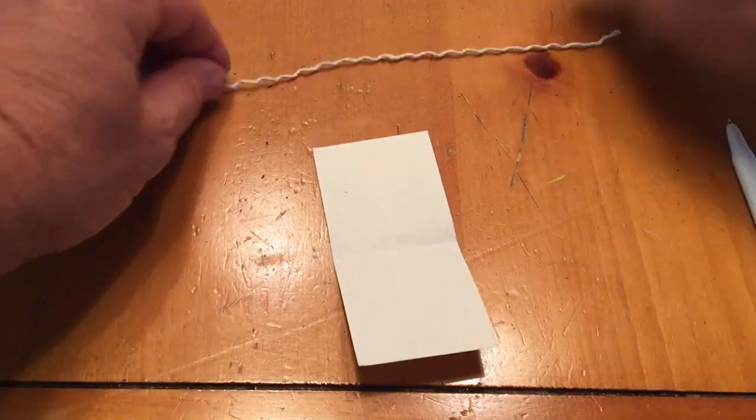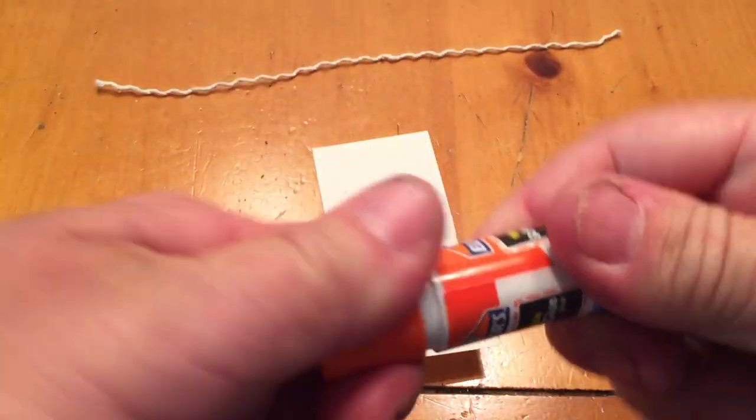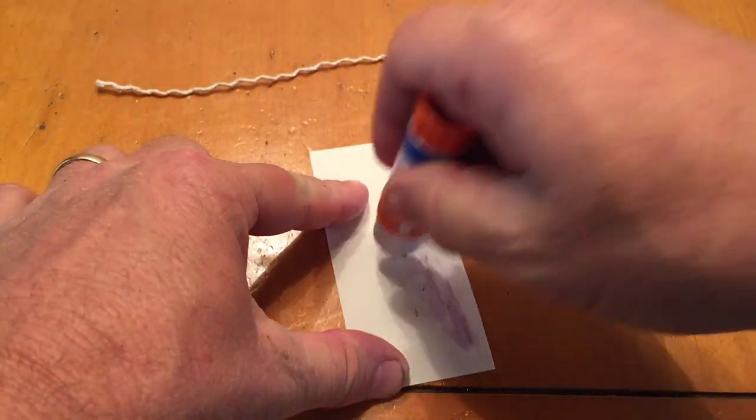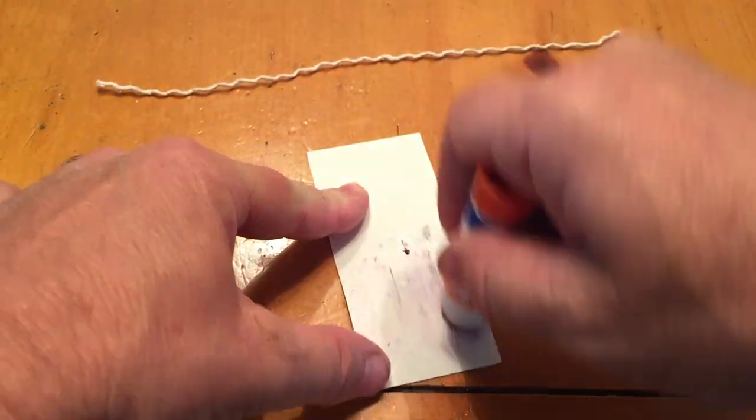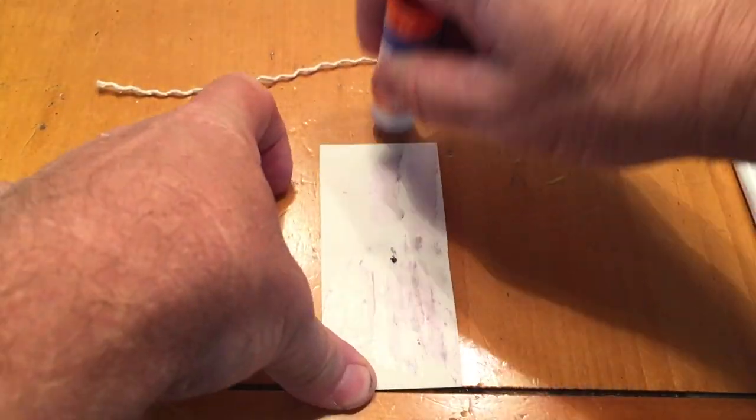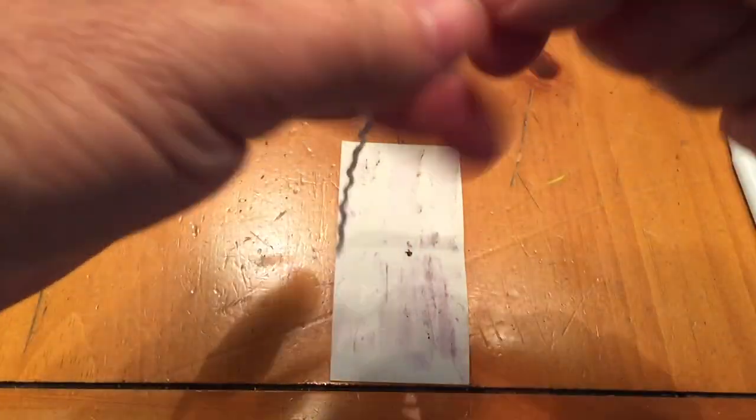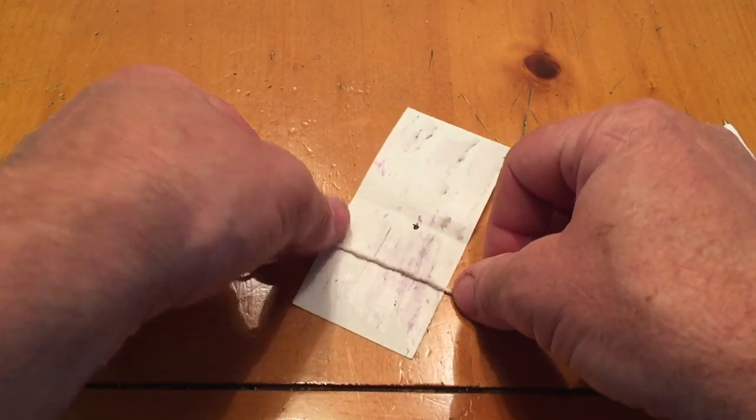You're going to take the string and you're going to put it right in the middle of the bottom two inches. First, you take your glue stick and go ahead and cover up both sides of the card stock. And then you're going to stick that short string in the middle of the bottom half of it right there.